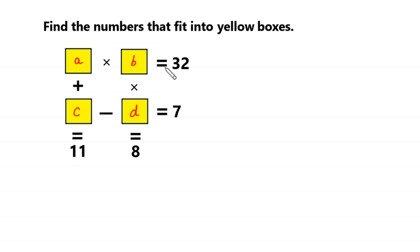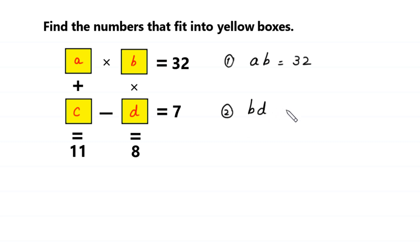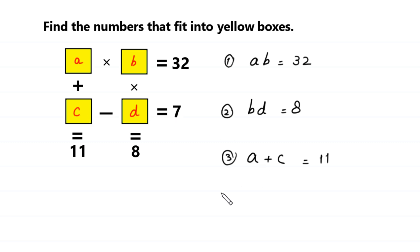Equation 1 is A times B is equal to 32. Equation 2 is B times D is equal to 8. Equation 3 is A plus C is equal to 11. And equation 4 is C minus D is equal to 7.